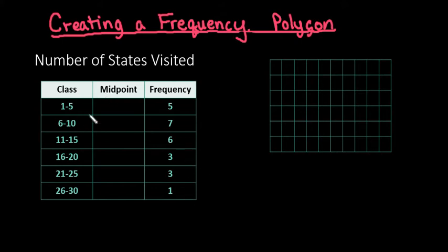To create the labels for your frequency polygon, we're going to use the midpoint of each class, and the y-axis is going to be the frequency. So this is the midpoint and this is the frequency.